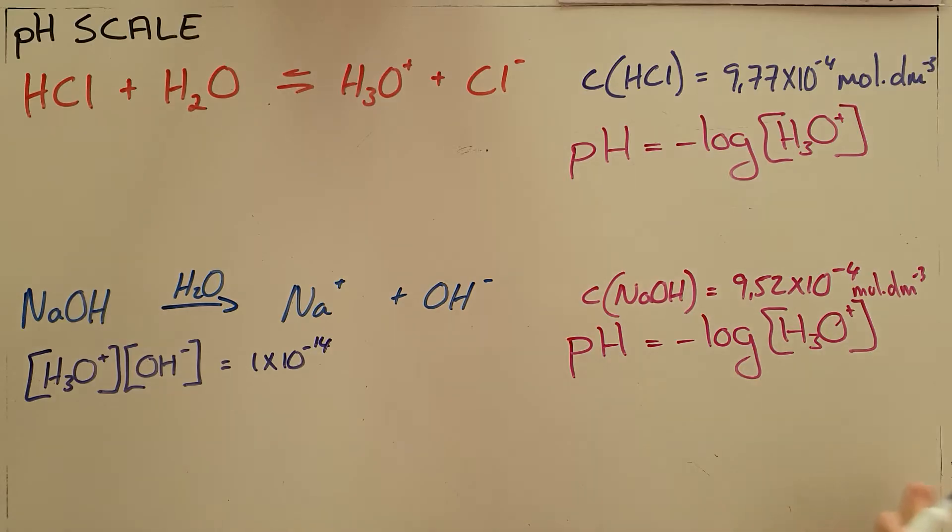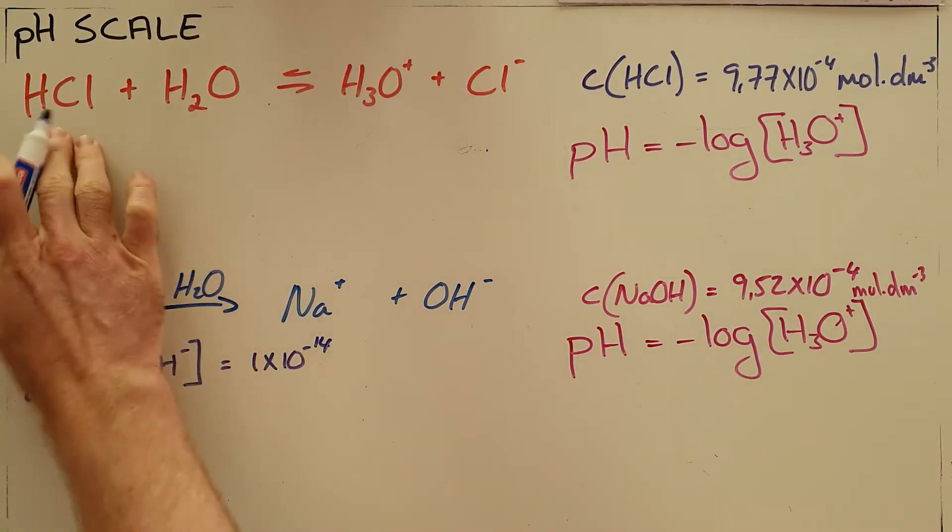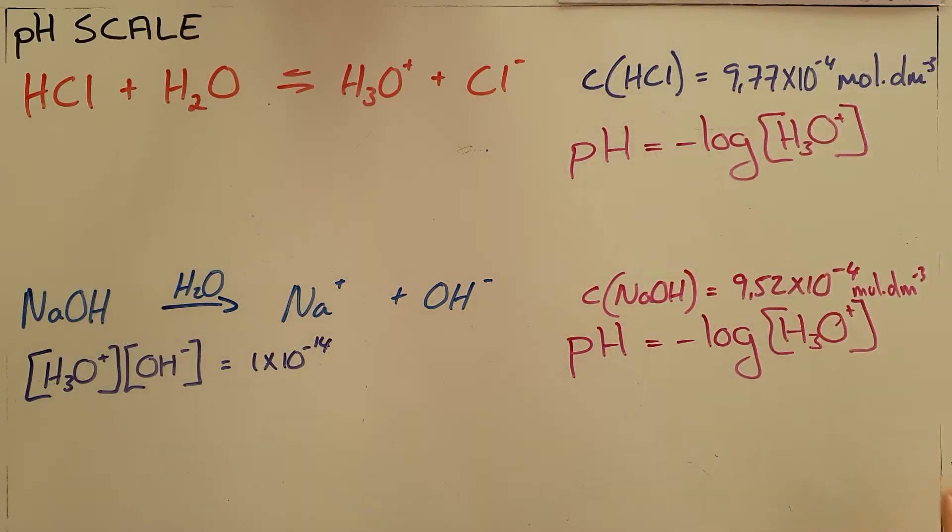So our most simple example is we are given a strong acid. We are told hydrochloric acid is added to water and that has a concentration of 9.77 times 10 to the minus 4 moles per cubic decimeter.